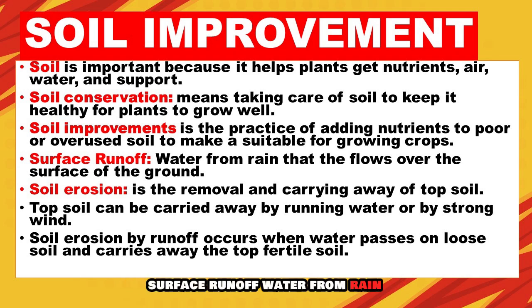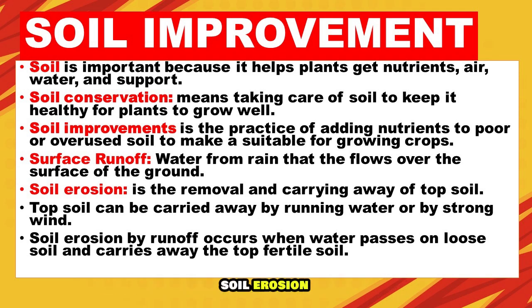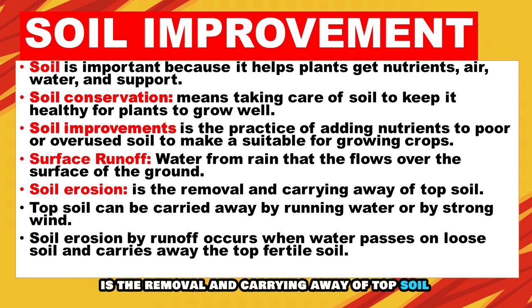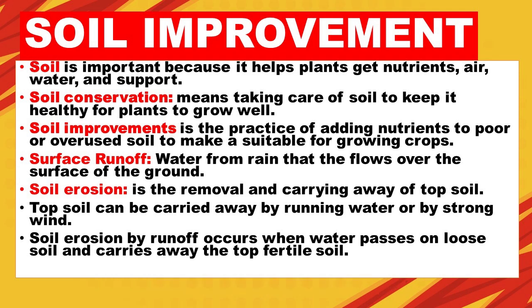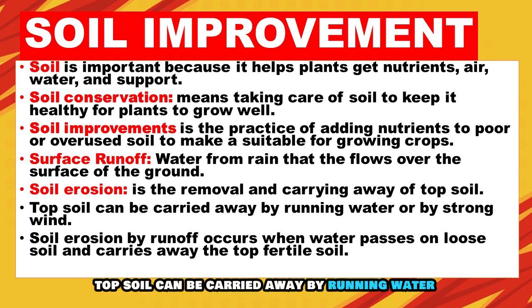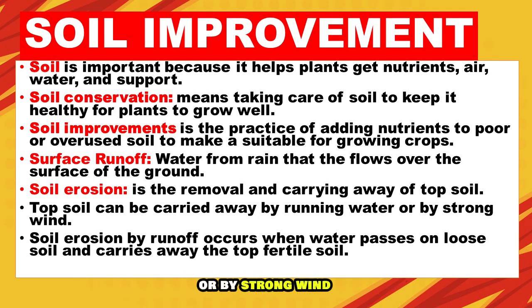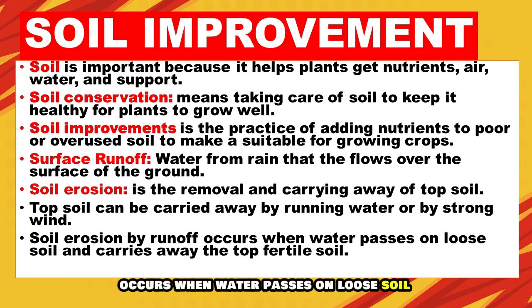Surface runoff is water from rain that flows over the surface of the ground. Soil erosion is the removal and carrying away of topsoil. Topsoil can be carried away by running water or by strong wind. Soil erosion by runoff occurs when water passes over loose soil and carries away the top fertile soil.